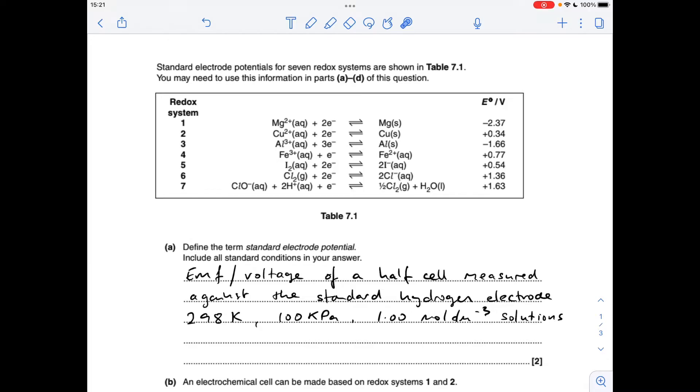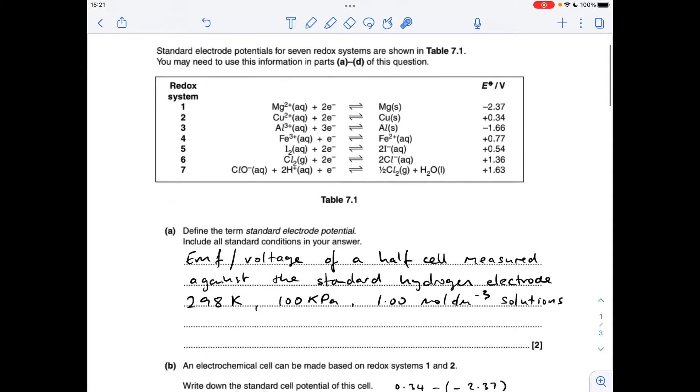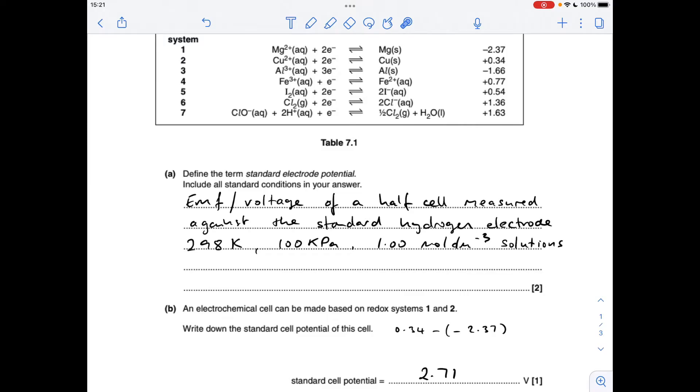Part B, the cell potential for the cell made from systems 1 and 2, so it's the most positive minus the least, so that's 2.71 volts.